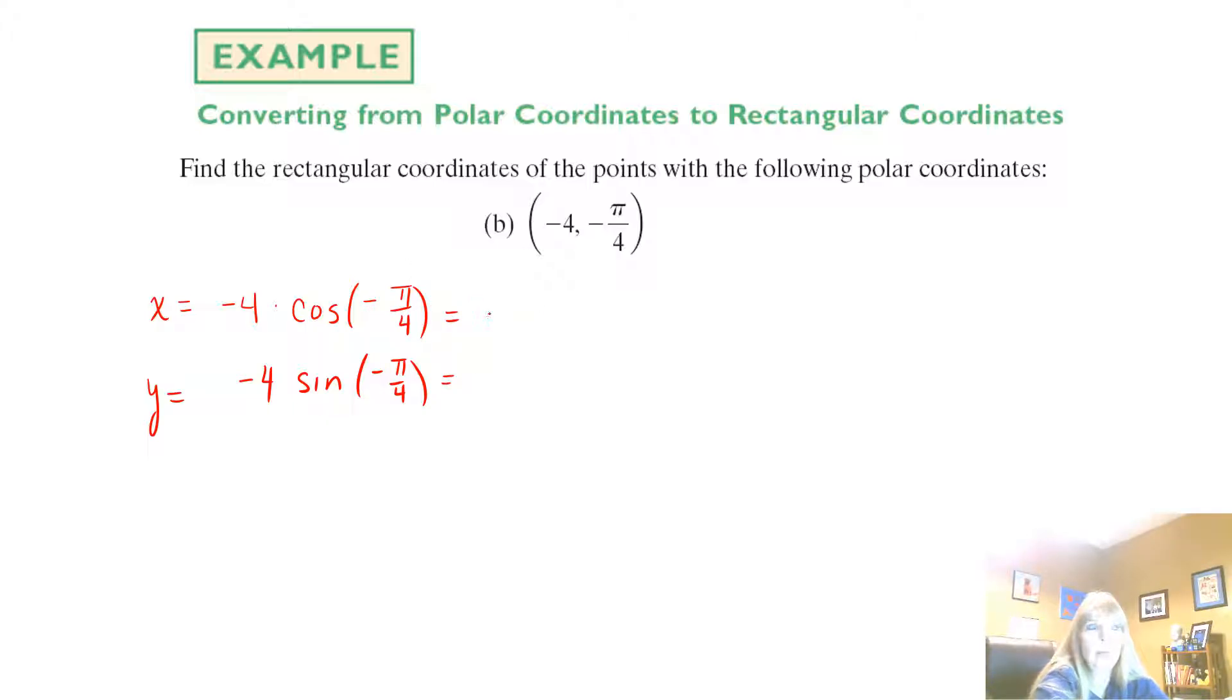If you remember your even and odd properties, do you remember them? This would be positive cosine pi over 4, right? Because that's even. The sine, the negative comes out, and then a negative and a negative is a positive. So this becomes the positive sine of pi over 4.